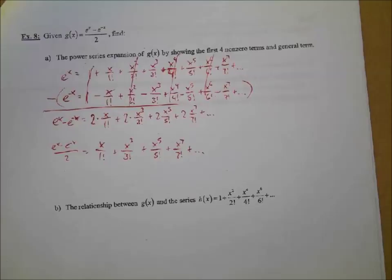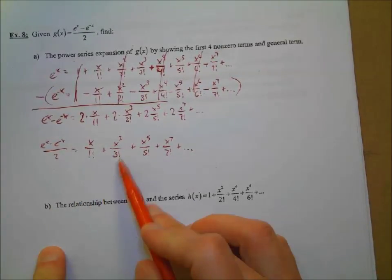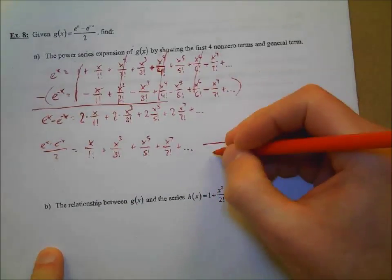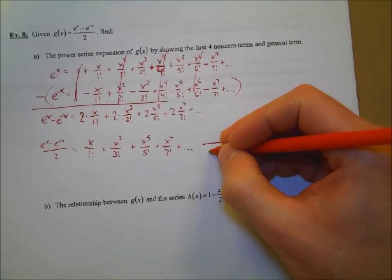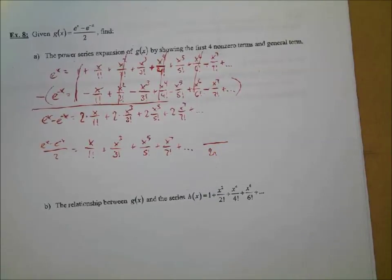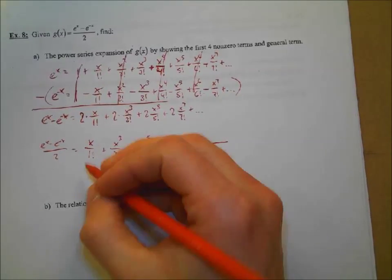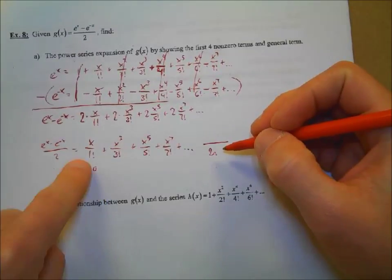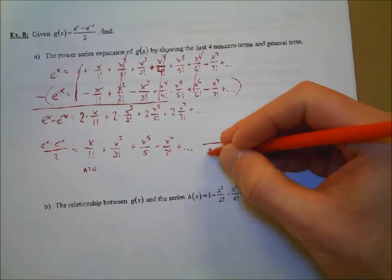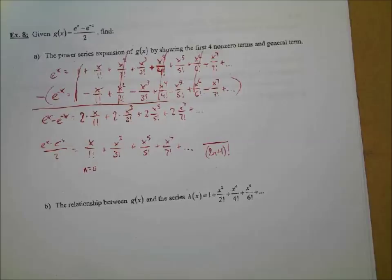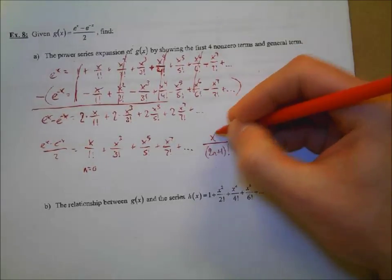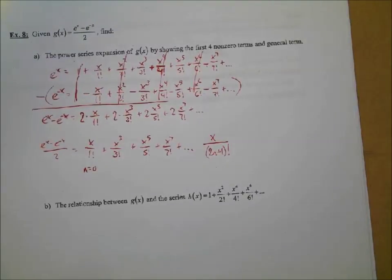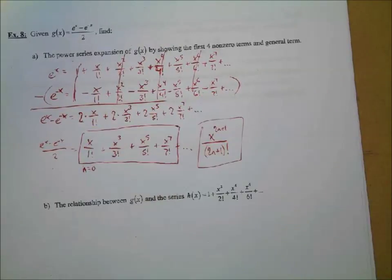We also need to come up with a general term. Looking at the pattern: we start with one factorial, then three, five, and seven — going up by two each time, indicating repeated addition of two. That means two n, but we need to adjust. Starting with n equals zero, plugging in zero to get one factorial means we add one: two n plus one in the factorial. X is also in the numerator with power two n plus one as well, matching the factorial. So there is our general term and our first four non-zero terms.